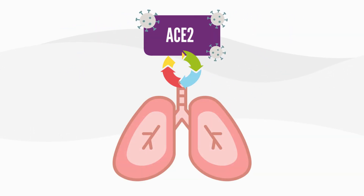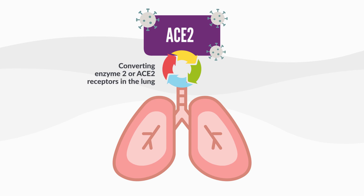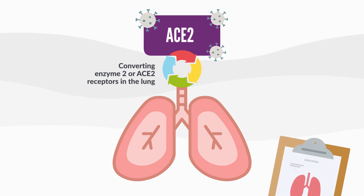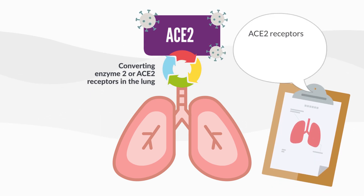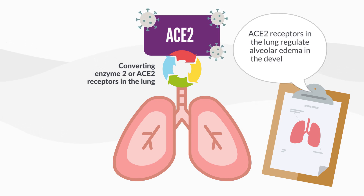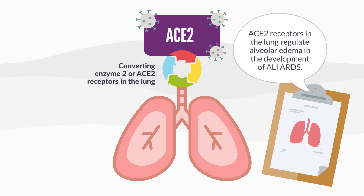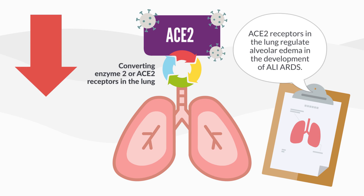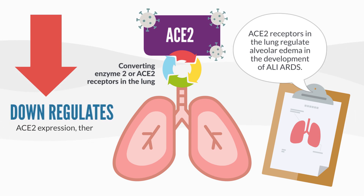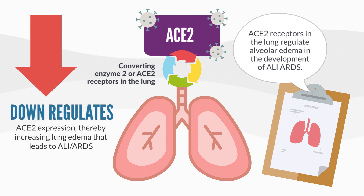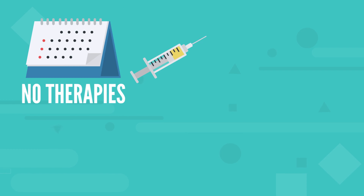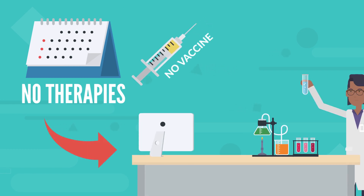The COVID-19 spike proteins also appear to bind to the angiotensin converting enzyme 2, or ACE2, receptors in the lung. Current evidence suggests that ACE2 receptors in the lung regulate alveolar edema in the development of ALI/ARDS. COVID-19 binding to the ACE2 receptor downregulates ACE2 expression, thereby increasing lung edema that leads to ALI/ARDS.